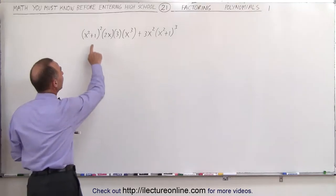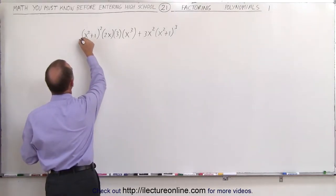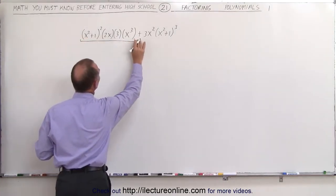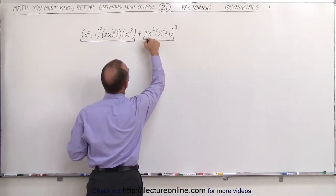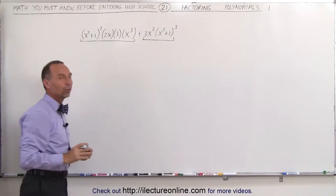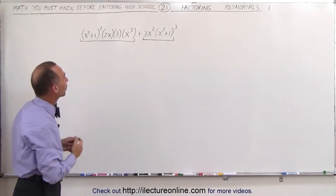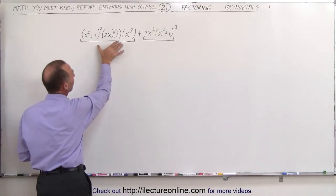Realizing that these are all multiplied together, this can be considered as a single term separated with a plus from this where we have this multiplied times this. So basically what we're looking for is common factors here and here.